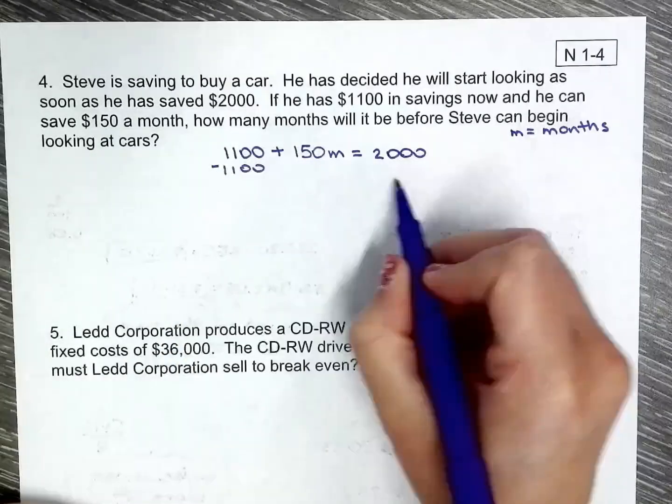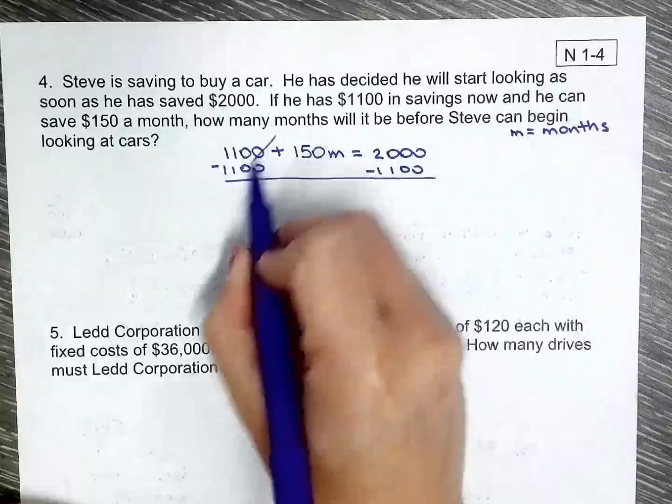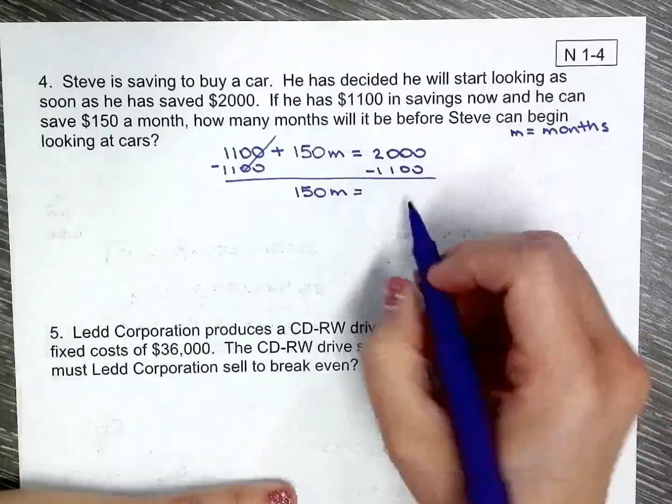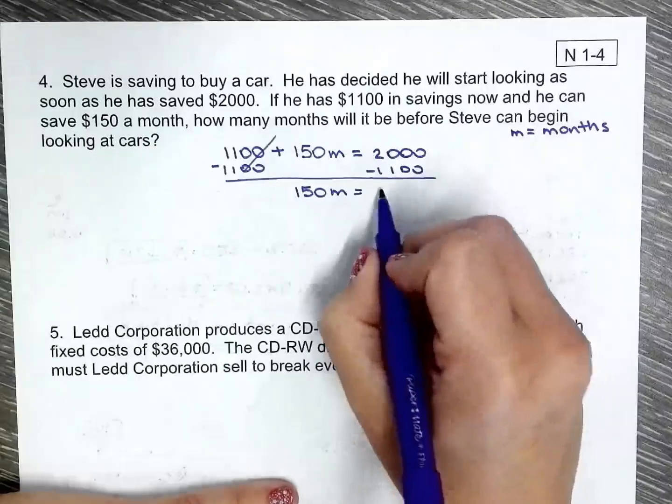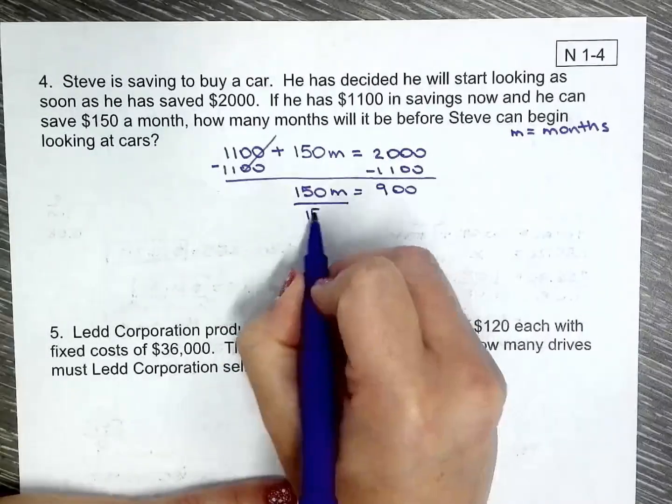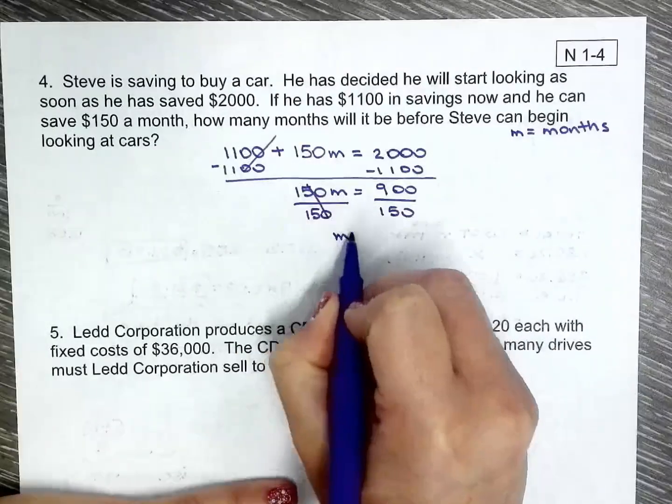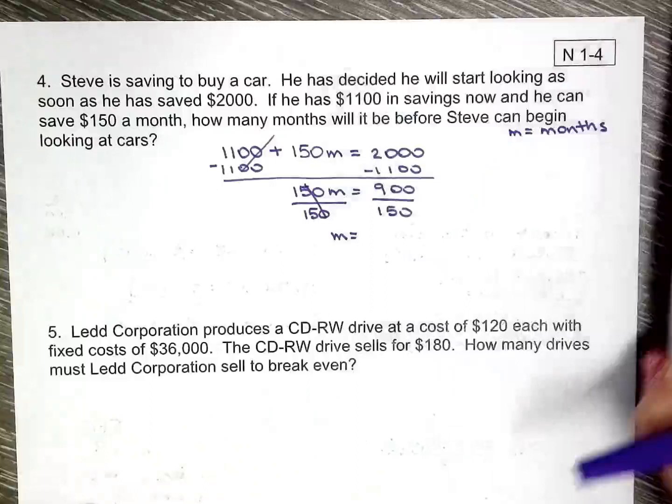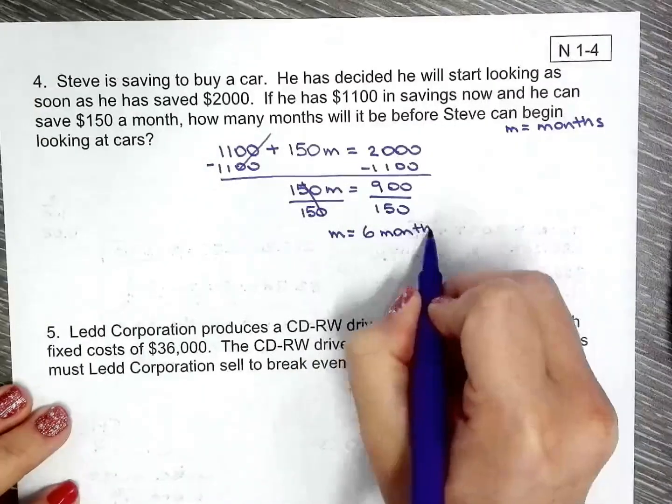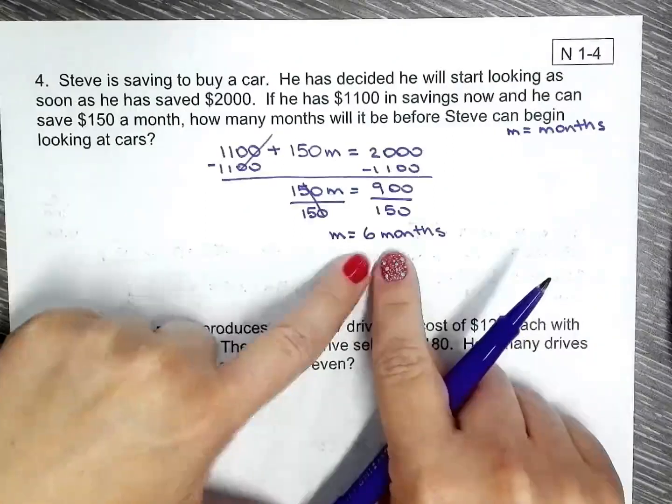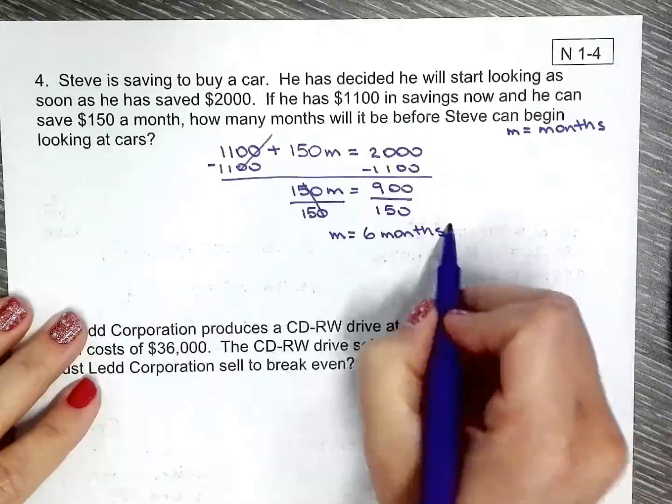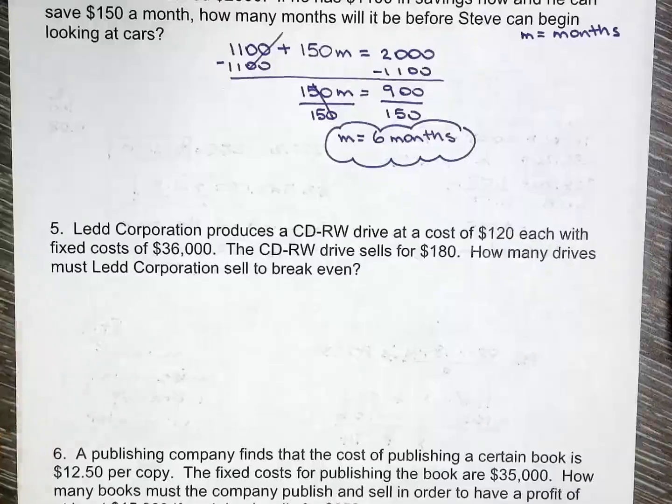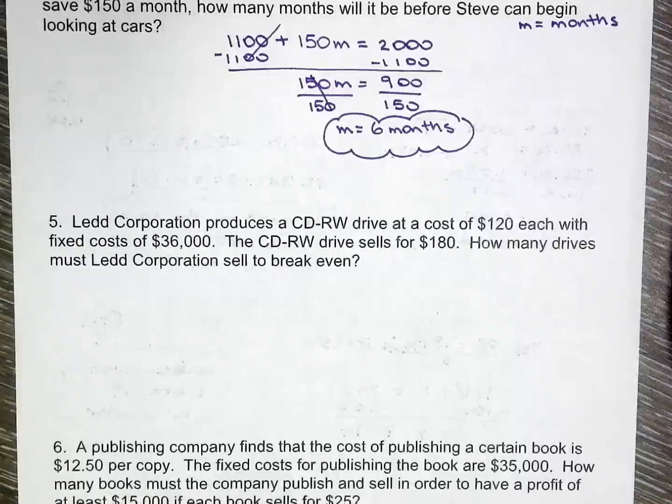So take away $1,100 from both sides. I marked them off because that equals zero. They don't cancel, it's just zero. Divide both sides by $150. Is that six? Yes it is. So after six months, he will be able to start looking for a car because at that time he's going to have $2,000. So after six months, he will be able to start looking for a car. Notice how we are picking up the pace here. We start really slow and then we get the hang of it, it just flows better.